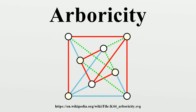In more detail, as any n-vertex forest has at most n−1 edges, the arboricity of a graph with n vertices and m edges is at least ⌈m/(n−1)⌉. Additionally, the subgraphs of any graph cannot have arboricity larger than the graph itself; equivalently, the arboricity of a graph must be at least the maximum arboricity of any of its subgraphs.